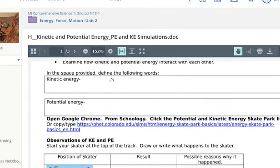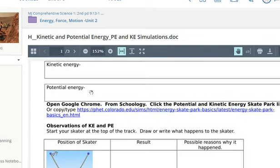In the space provided, define the following words. Kinetic energy. I know that kinetic energy is the energy an object has due to its motion, so I would put that in there. Potential energy. Well, looking at my notes, I know that potential energy is the energy that's stored in an object based on its position.